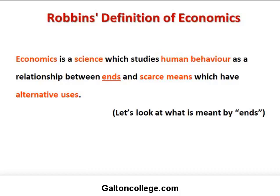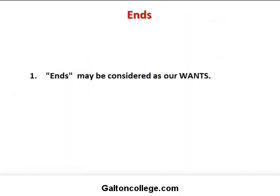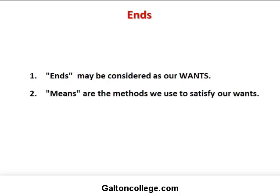Let's look at ends and see what's associated with this idea of wants or ends. Ends may be considered as wants — that's why we work, that's why we participate in a working life. We want to acquire the resources to satisfy our wants. Means are the methods we use to satisfy our wants, which would include production, agriculture, the extractive industries, manufacturing, and services.